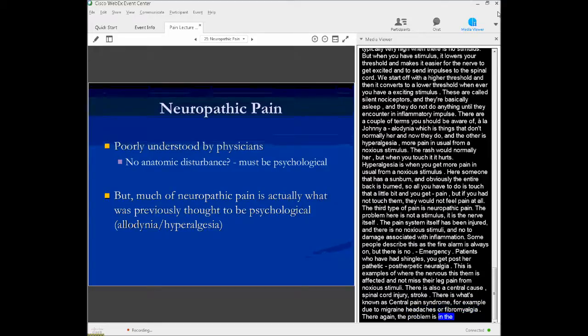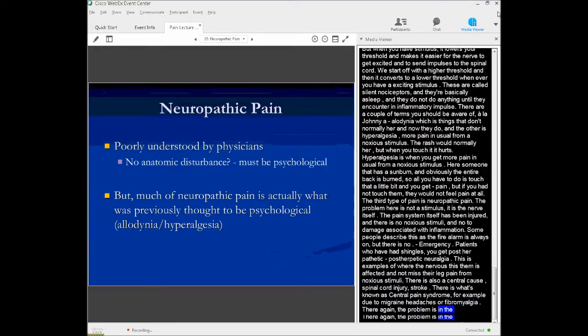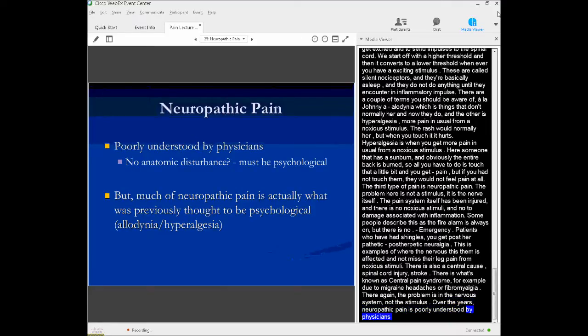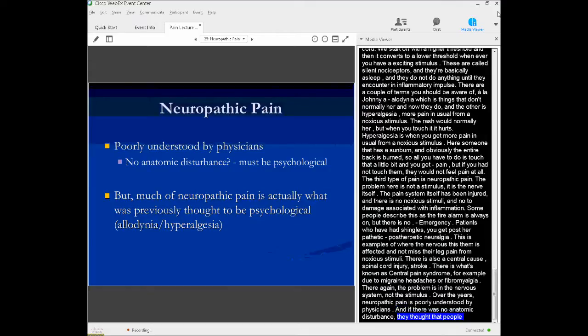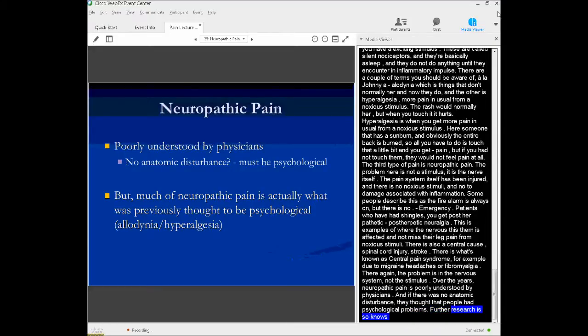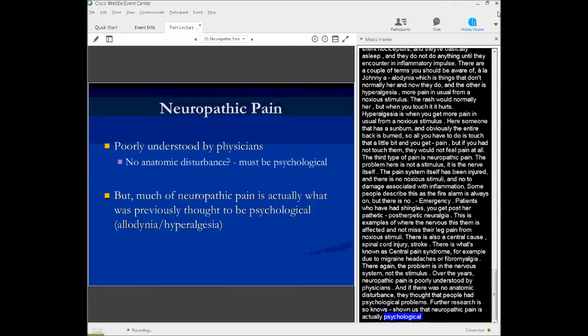There's what's known as central pain syndrome that's, for example, due to migraine headaches or fibromyalgia, where the problem is in the nerves or the nervous system and not the noxious stimulus. This has been, over the years, neuropathic pain has been poorly understood by physicians. And as I mentioned before, if there was no obvious anatomic disturbance, then it was thought that these people had psychological problems. But further research has shown us that neuropathic pain is actually what was previously thought to be psychological. So, again, examples of allodynia and hyperalgesia - things that normally don't hurt that do, and things that normally wouldn't hurt when you put a light stimulus on, do.